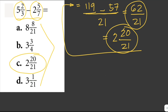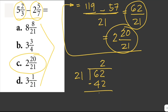You can verify using long division: 62 divided by 21. Two times 21 is 42, and 62 minus 42 is 20. So the remainder is 20, confirming the answer is 2 and 20 over 21.